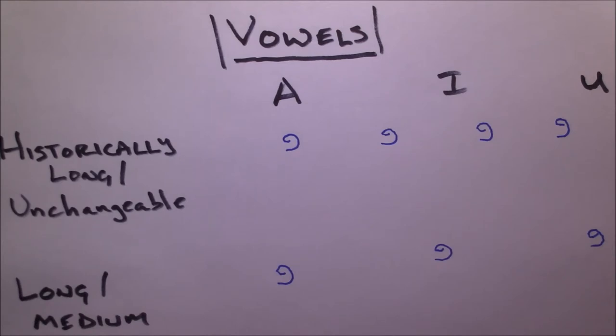The Masoretes were very careful to never change what they had received in the text. And so when we get to vowel reduction, which is a big part in understanding how to read and hear Hebrew, these will always remain the same. They will not reduce under any circumstances, hence they are unchangeable.